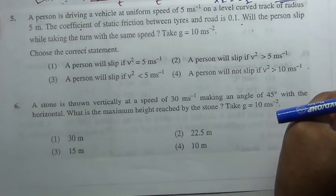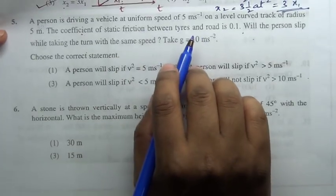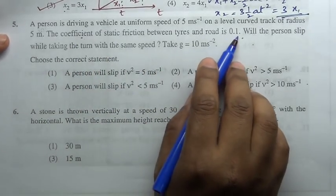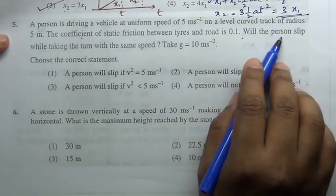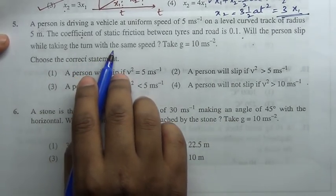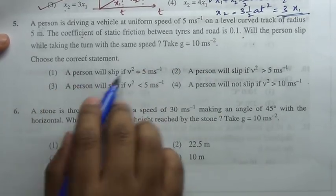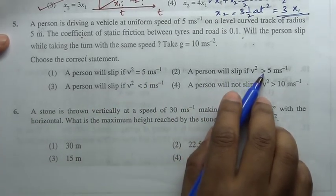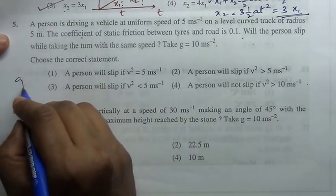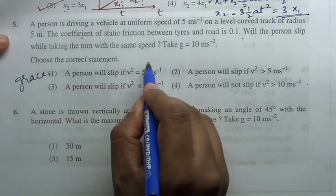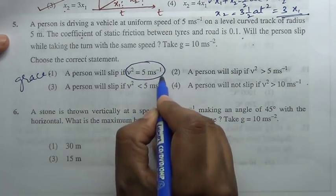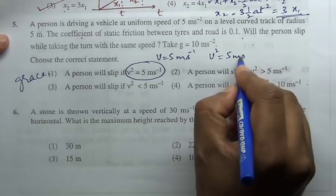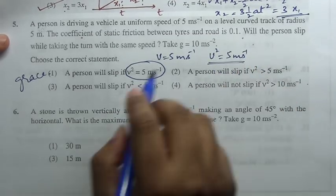A person is driving a vehicle with a uniform speed of 5 meter per second on a level curved track of radius 5 meter. The coefficient of static friction between tires and the road is 0.1. Will the person slip while taking the turn with the same speed? Take g equal to 10 meter per second square. I can easily skip this question, it's a grace mark question because look at the options: v square is 5 meter per second—dimensions are not correct. Therefore options are not okay.